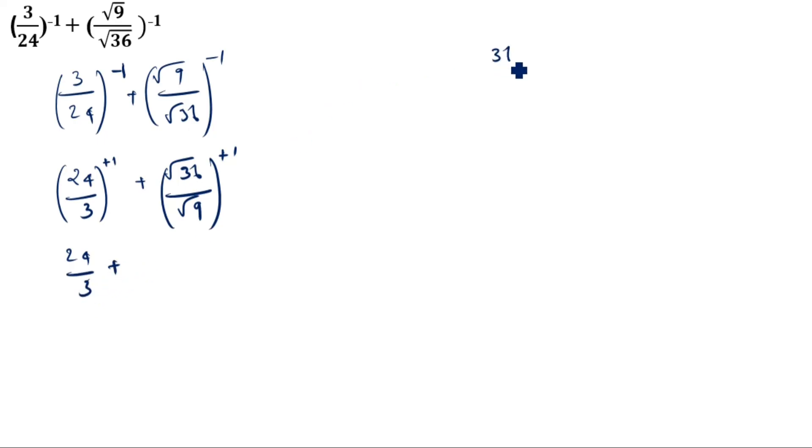Now 24/3 plus... For √36 you have to do prime factorization: 2×2×2×2×3×3, so you write √36 as √(2×2×2×2×3×3) divided by √9, which you write as √(3×3).